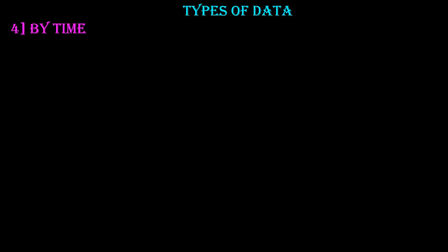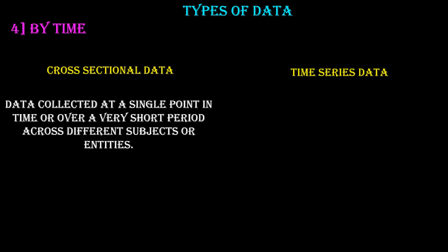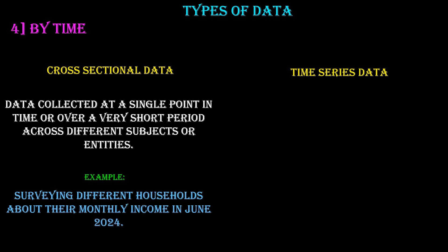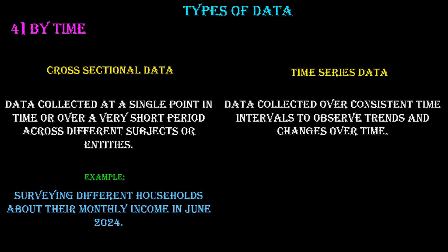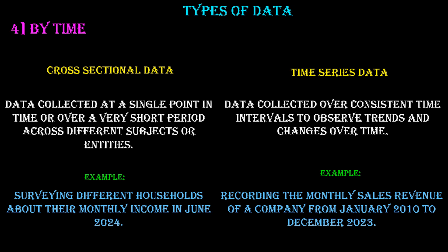By time, we have cross-sectional data and time series data. Cross-sectional data is collected at a single point in time or over a very short period across different subjects or entities — for example, surveying different households about their monthly income in June 2024. Time series data is collected over consistent time intervals to observe trends and changes over time — for example, recording the monthly sales revenue of a company from January 2010 to December 2023.